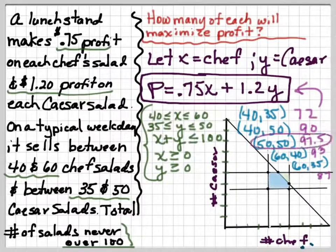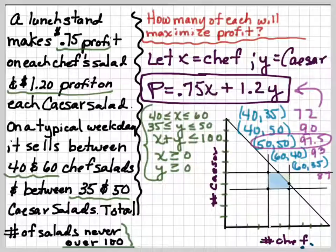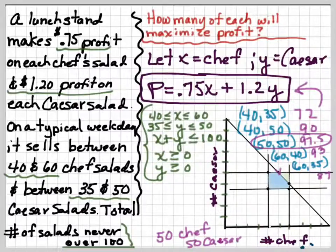And that means that our point 50, 50 is our biggest profit. So what does that mean? Well, there's the point. We need to sell 50 chef salads and 50 Caesar salads to maximize the profit.